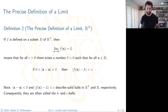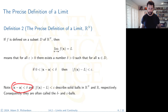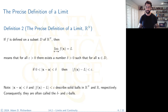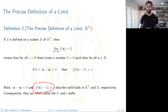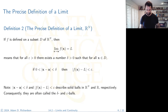These conditions describe solid balls in R^n and R respectively, so they're often called the delta and epsilon balls. Math majors, you will talk about these a lot — especially if you study topology or metric spaces. This is basically a ball centered at a whose radius is less than delta, and a ball centered at L whose radius is less than epsilon.